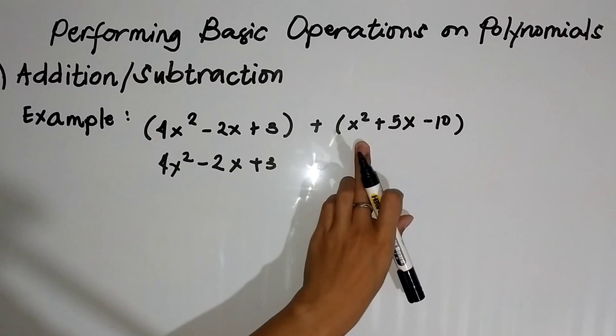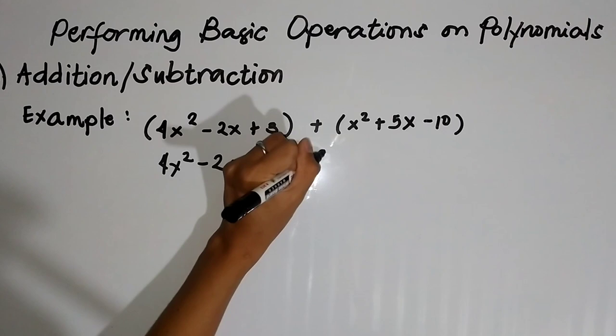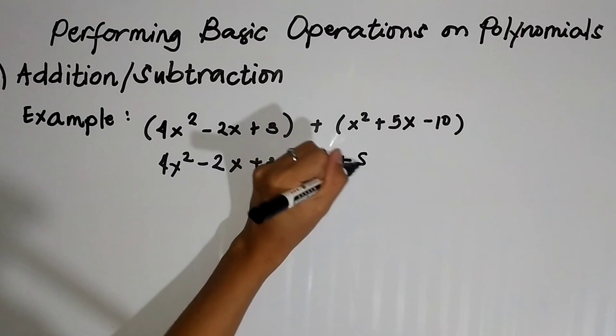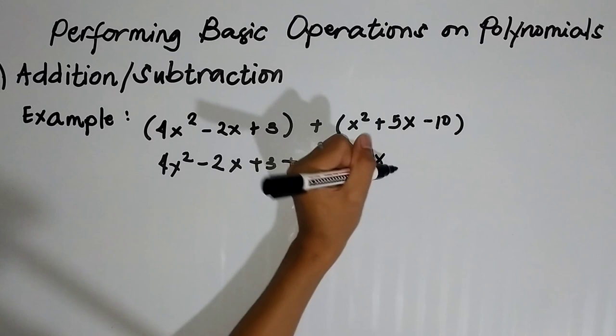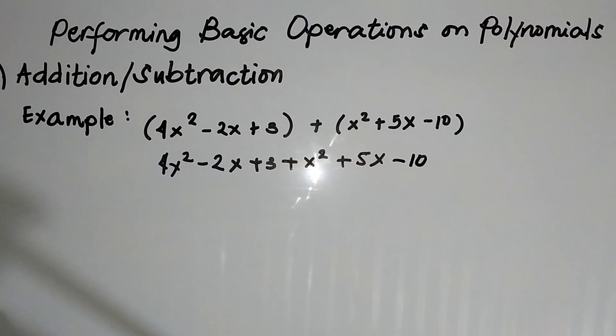Now gamitin na natin yung distributive property. We have positive — distribute natin sa positive x squared: positive times positive is always positive, so we have positive x squared. Positive times positive 5x, that would be positive 5x. Positive times negative is always negative, so copy the term negative 10.